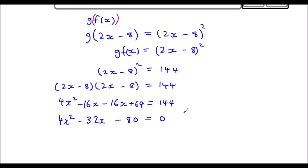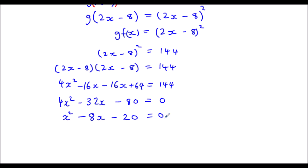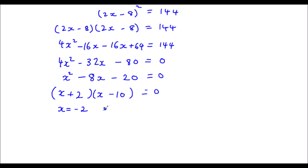I've got a quadratic. I want to factorize it, but first I'll divide through by 4 to make it easier. 4x² ÷ 4 = x², 32x ÷ 4 = 8x, and 80 ÷ 4 = 20. So I've got x² - 8x - 20 = 0. Factorizing: I need two numbers that multiply to -20 and add to -8. That's +2 and -10. So (x + 2)(x - 10) = 0, which means x = -2 or x = 10.